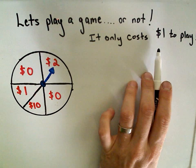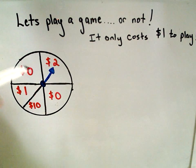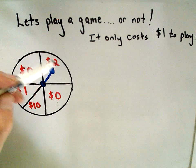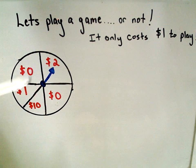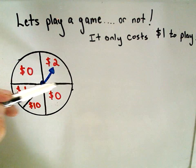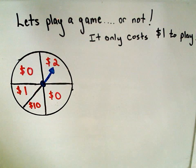So suppose to play the game, it only costs $1. And forgive my bad artistry, so suppose you have like a little spinner. So that's what the circle is, and I've tried to divide it into four equal regions.